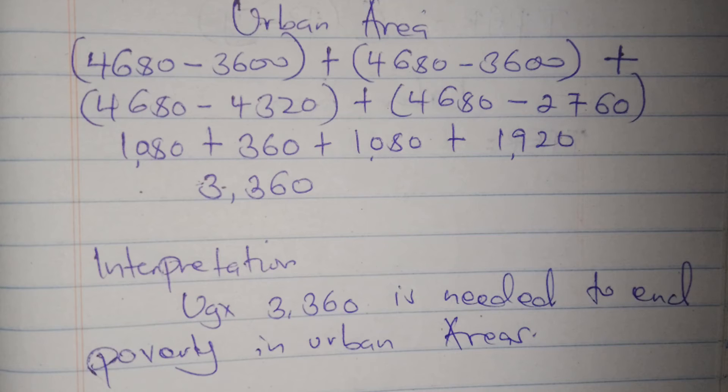After getting the differences you add them, you add all of them. When you get the total, that total is what is called the total poverty gap, which is 3,360.